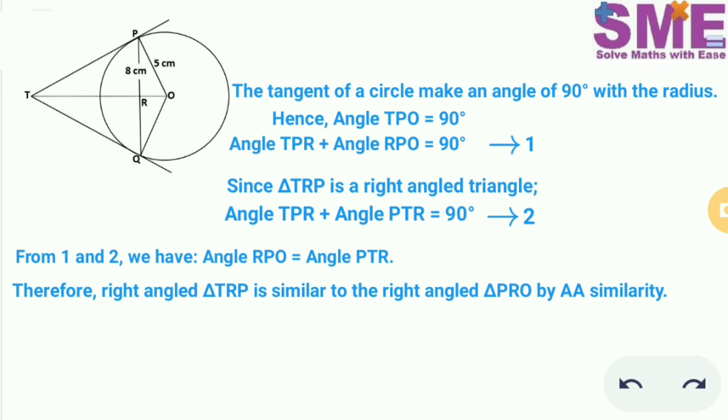So therefore from this we can say that triangle TPO and triangle TPR and triangle ORP, all these three right angle triangles are similar by the angle-angle similarity. So this gives us that TP upon PO is equal to RP upon RO.